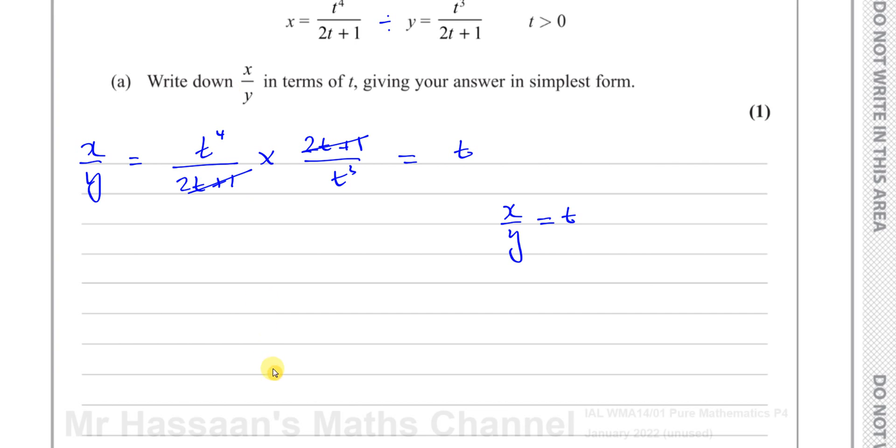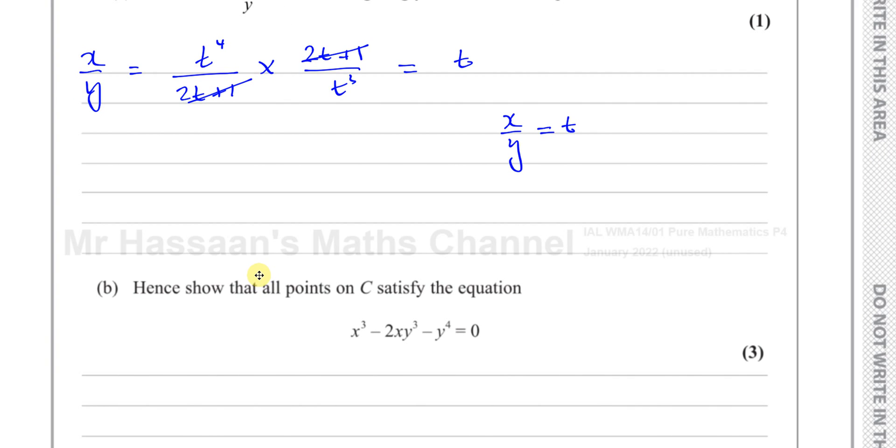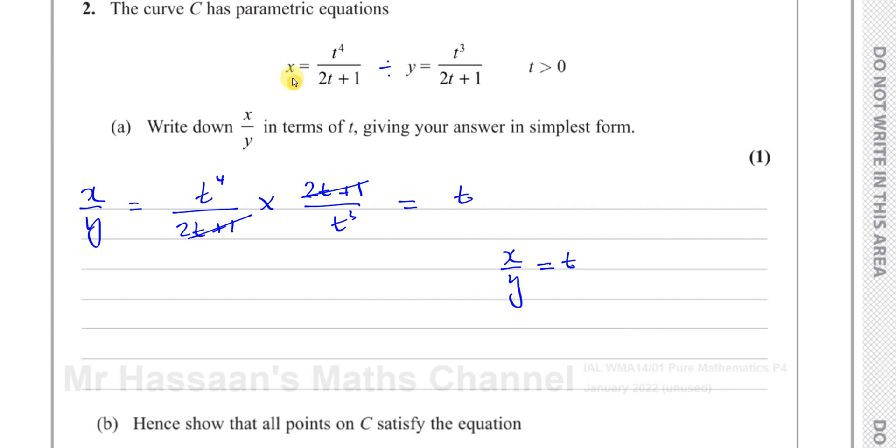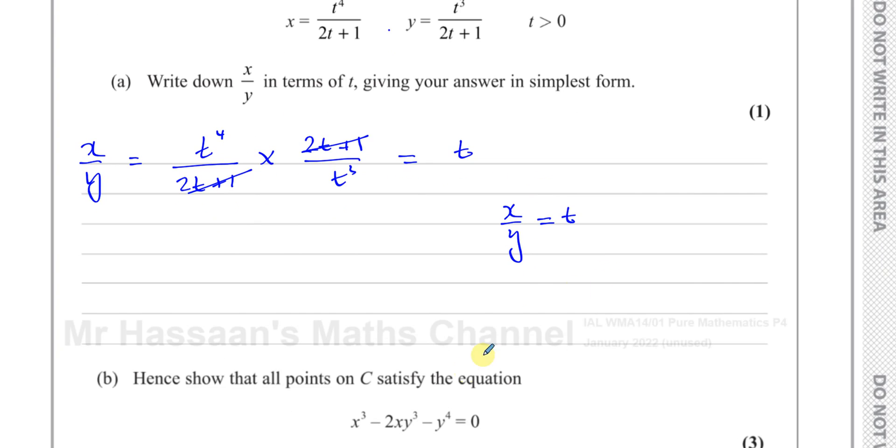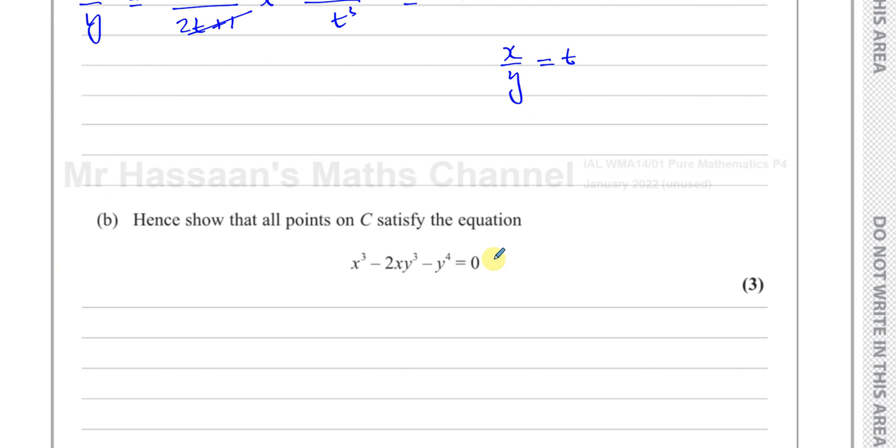Now we're going to move on to part b. It says hence show that all points on C satisfy this equation: x cubed minus 2xy cubed minus y to the power four equals zero. Now what we can do is we can replace it. Hence means we have to use what we just found. So we know that x over y is equal to t, or t is equal to x over y. So what I'm going to do is I can choose either of these two equations and replace the t with x over y.